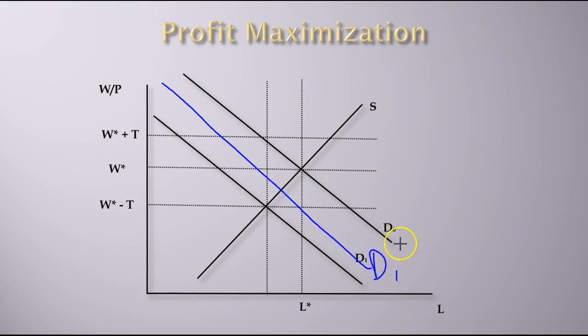The actual cost ends up getting shared. We have D1, this is the equilibrium, and W1 is going to be what the employees receive, and W2 is going to be what the employers end up paying.